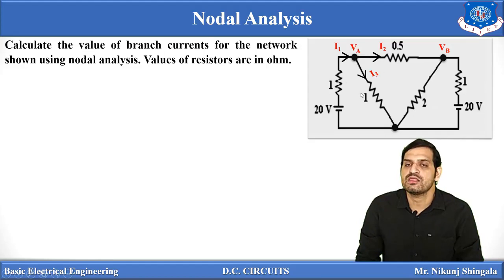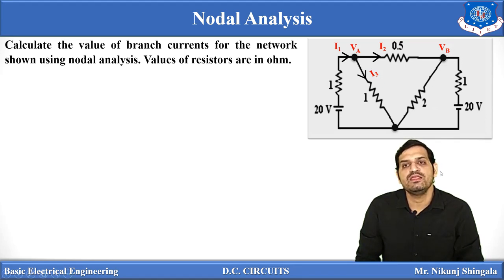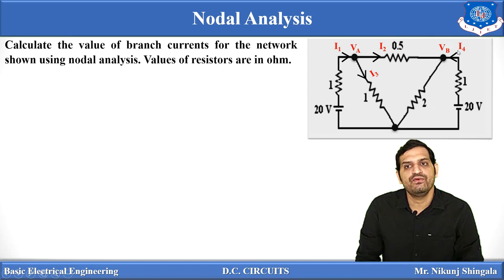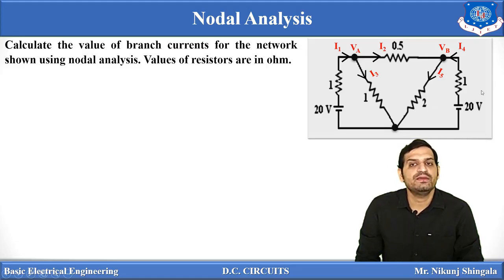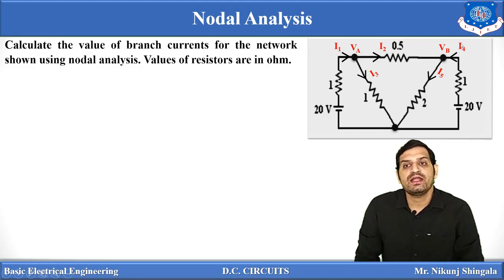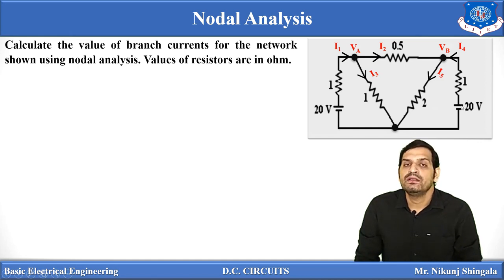At node VB, a 20-volt battery is also connected. Assuming current I4 flows into node VB from the battery, two currents enter node VB — I2 and I4 — and one current I5 leaves. You can take I4 in the opposite direction as well, but you will get a negative value; the magnitude remains the same. So step two is complete: we have assigned all branch currents.